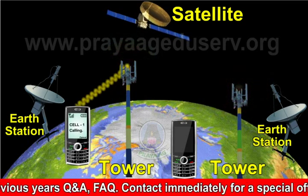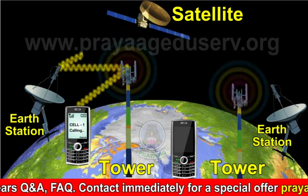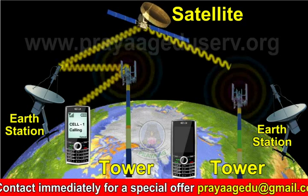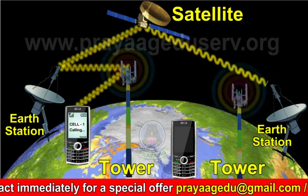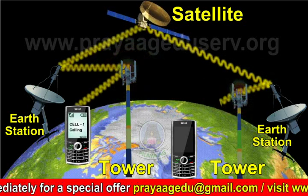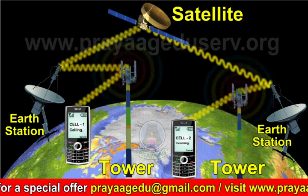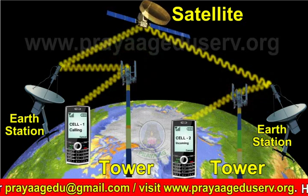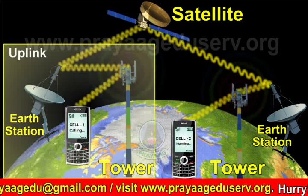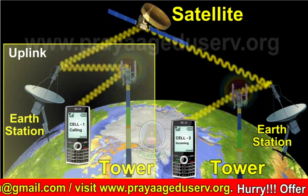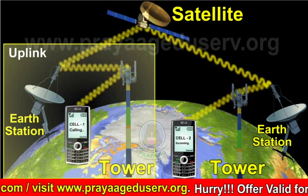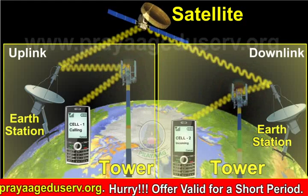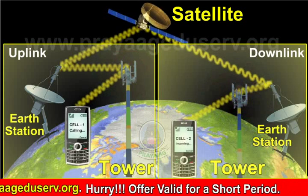Satellite communication is basically a microwave link repeater. A satellite receives the energy from an earth station, amplifies it and returns it at a frequency of about 2 GHz away from the uplink frequency, i.e. earth to satellite. This prevents the interference between the uplink and the downlink, i.e. satellite to earth.